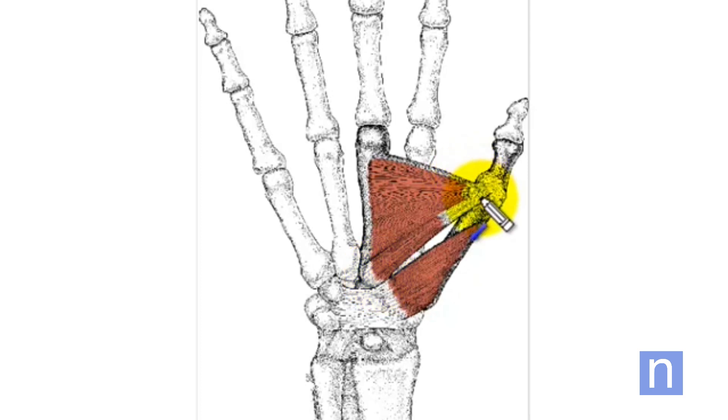The first is the adductor pollicis. This is a name which just describes what it does - it pulls the thumb towards the midline of your hand. Its origin is a very broad attachment to the third metacarpal. The insertion is over the end portion of the metacarpal of the thumb.